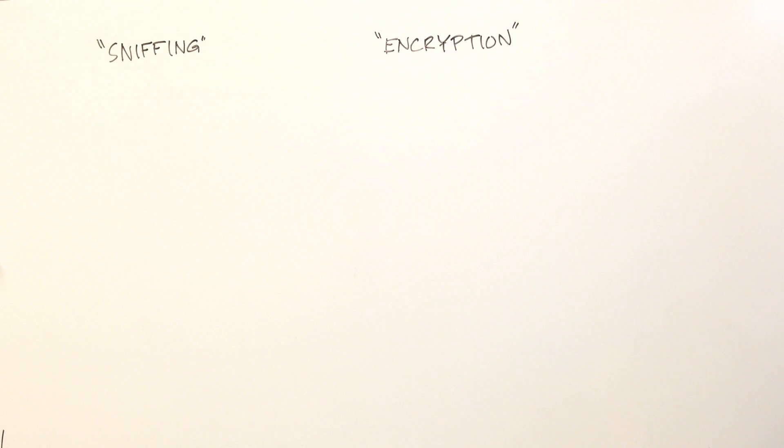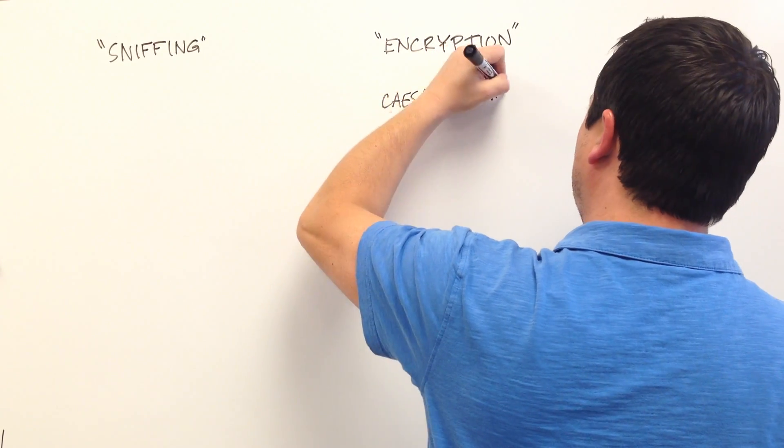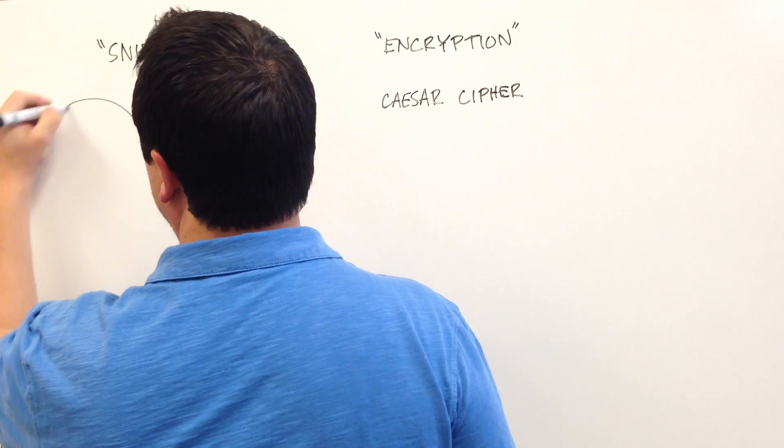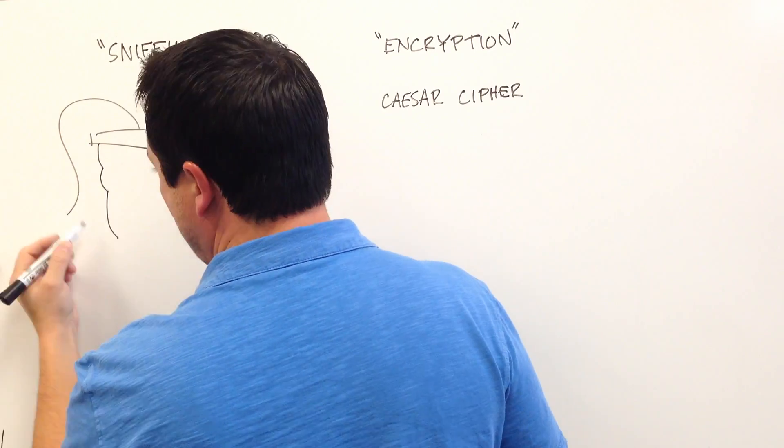Today's encryption uses very complex mathematics, but it's based on principles used for over 2,000 years. In ancient Rome, soldiers used an encryption technique called the Caesar Cipher to send messages to each other.